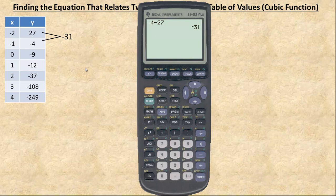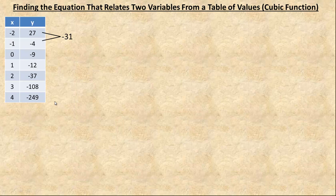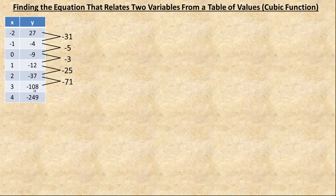Make sure you subtract in the right order because it is actually the change from this y variable to this y variable. For the next one we would go negative 9 in the calculator and subtract from that the negative 4. The difference of negative 5 — it has gone down 5 from negative 4 to negative 9. From negative 9 to negative 12 it has gone down 3, so we would have negative 3 next. Then down 25, down 71, and down 141. The first differences are different — they are not all the same — so that is how we know it is not linear.